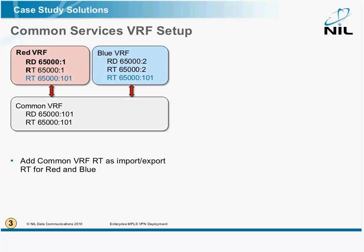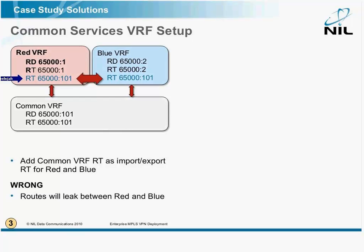A simple scenario is: just add the import-export route targets for the common VRF into the blue and the red VRF. The problem with this — and this is absolutely the wrong approach — because you have the same import and export route targets in red and blue, you will also transfer routes between them.